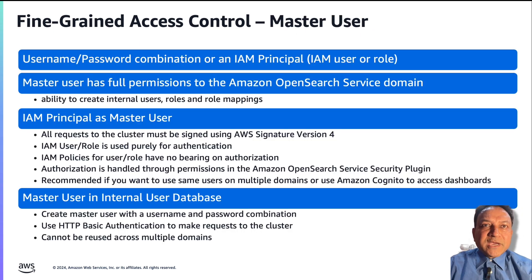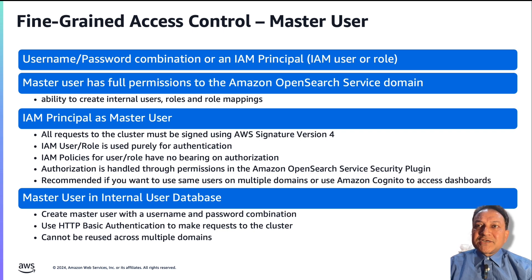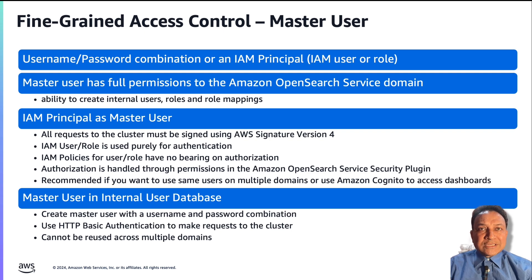First, let us begin by understanding what is the master user in an Amazon OpenSearch Service. A master user can be either a username-password combination or an IAM principal such as an IAM user or role. The master user has full permissions to the Amazon OpenSearch Service domain, including the ability to create internal users, roles, and role mappings.